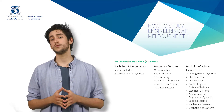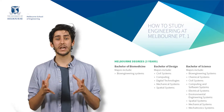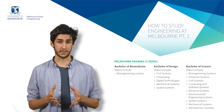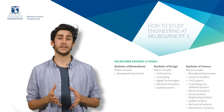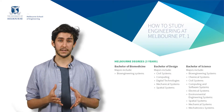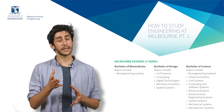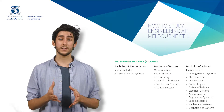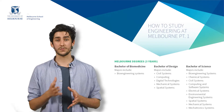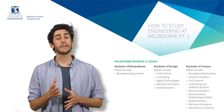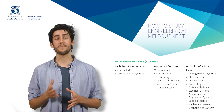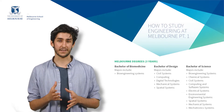Or, you can choose between a major in Bioengineering Systems, Chemical Systems, Civil Systems, Computing and Software Systems, Electrical Systems, Environmental Engineering Systems, Spatial Systems, Mechanical Systems, or Mechatronic Systems in the Bachelor of Science.